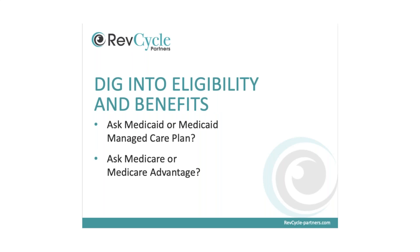Dig into eligibility and benefits — this is crucial. Ask: is this traditional Medicaid or a managed care plan? Think of it as a completely separate insurance, even though the patients walk in saying, "I have Medicaid." Those patients don't always know what plan they are enrolled in. A lot of times the plan is based on eligibility factors like income, work status, or a life event, and that can change month to month for some. Some Medicaid managed care members can have co-pays, co-insurance, and deductibles. There's a misconception that all Medicaid automatically means no patient out-of-pocket.